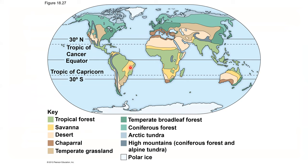Looking at the distribution of biomes on the globe, we can see tropical forests in green, and chaparral around the Mediterranean Sea. The distribution of biomes is mostly affected by climate and how far a region is from the equator.